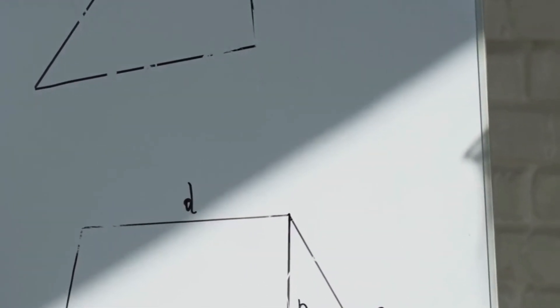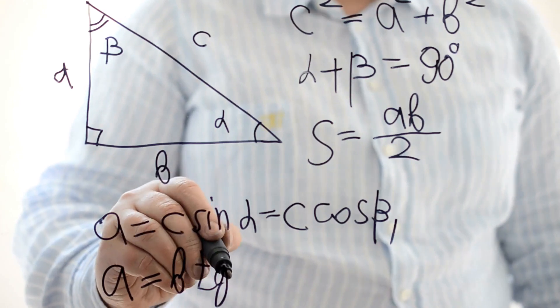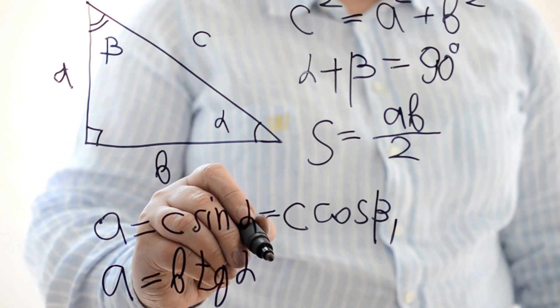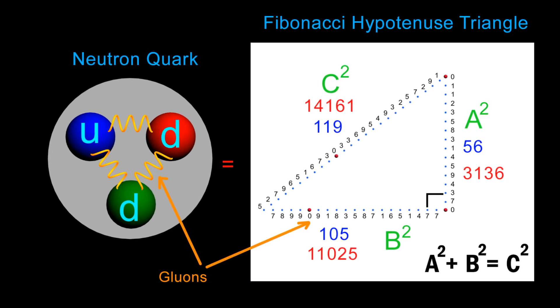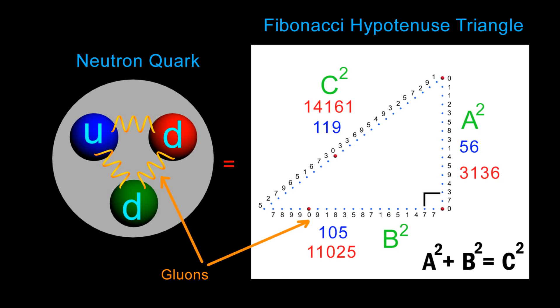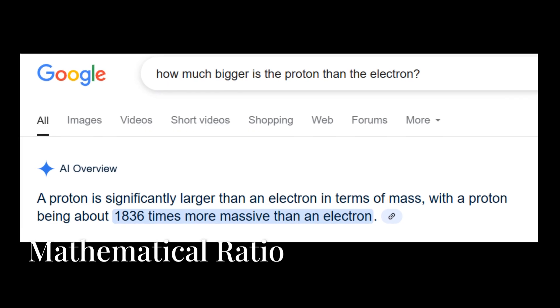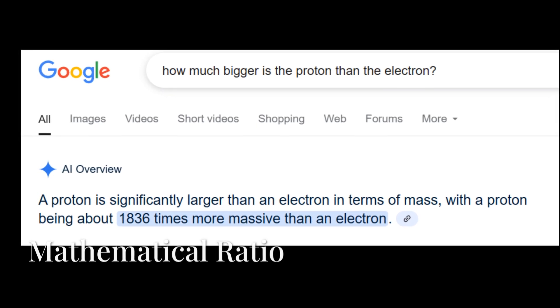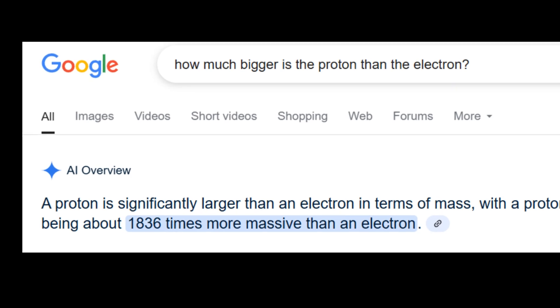It then explained that it used the values from the hypotenuse and the height of the 60-digit hypotenuse triangle because this represents the binding force of the quark-gluon field. What could I say to that? This thing knows far more about science than I ever will.